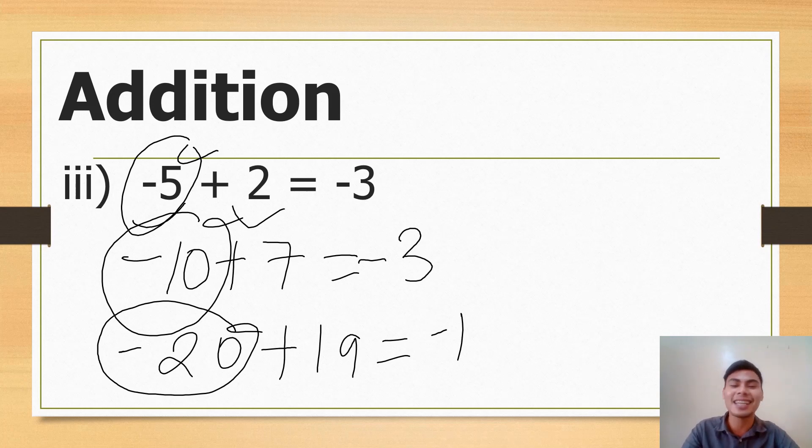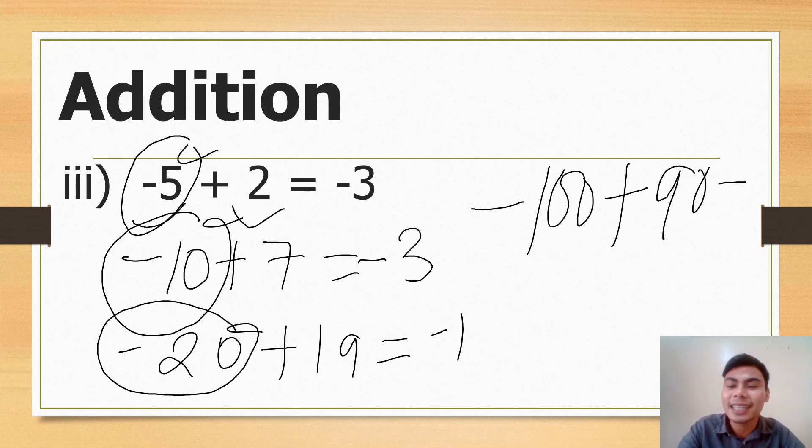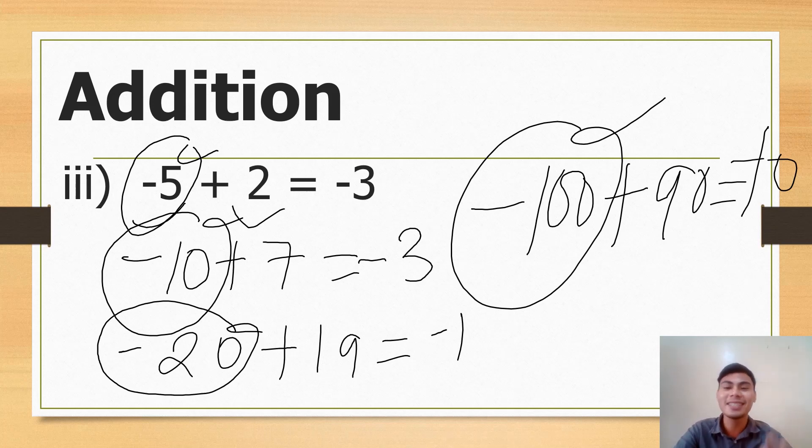Okay, again at home: negative 100 plus 90. We are adding different sign, subtract. 100 minus 90, 10. Tapos mas malaki si 100 kaysa ni 90, which holds the negative sign, put negative. So it's negative 10. Ganyan lang kaisi. I learn, I love to learn math, I love to learn math, I love to learn math. Ganyan.